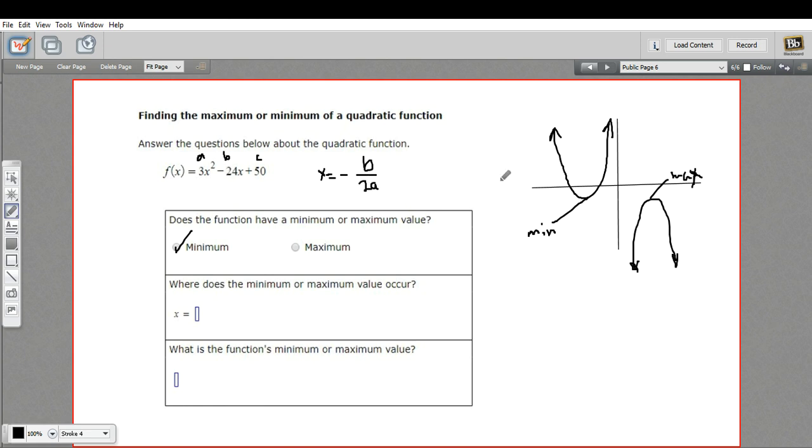So b here is negative 24, so we've got a negative, negative 24, and a is 3, so 2a is 6. So negative, negative 24 over 6 is a positive 4.